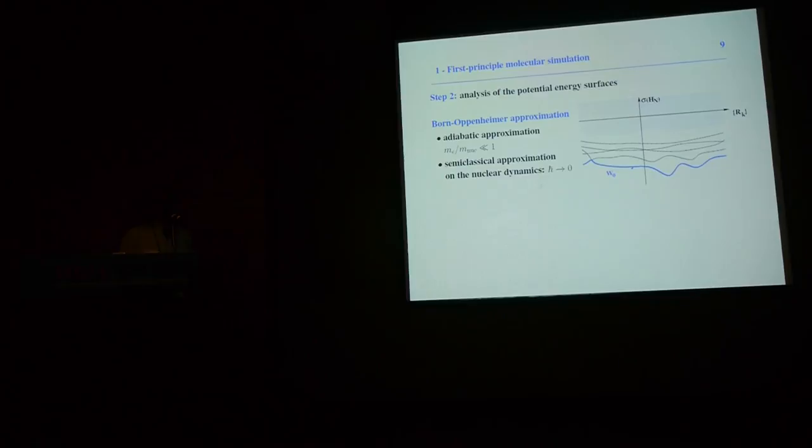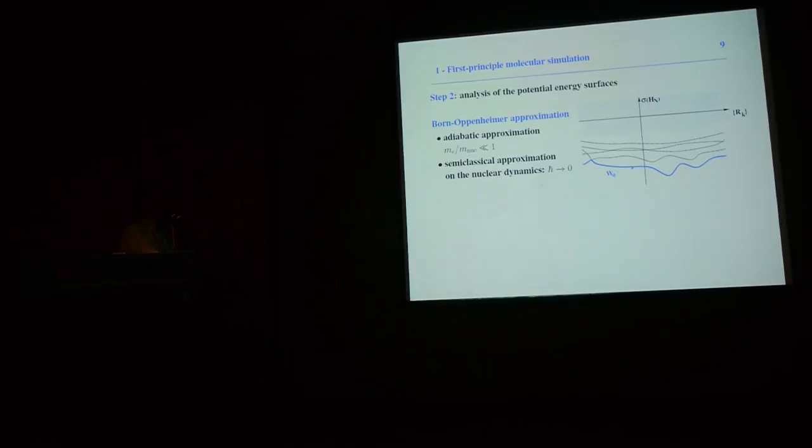We proceed to the second step: the analysis of these potential energy surfaces. We work in the framework of the Born-Oppenheimer approximation, which consists first of an adiabatic approximation — letting the ratio between the electron mass and the mass of the nuclei go to zero — followed by the semi-classical approximation on the nuclear dynamics. There are also ways to go beyond this Born-Oppenheimer approximation.